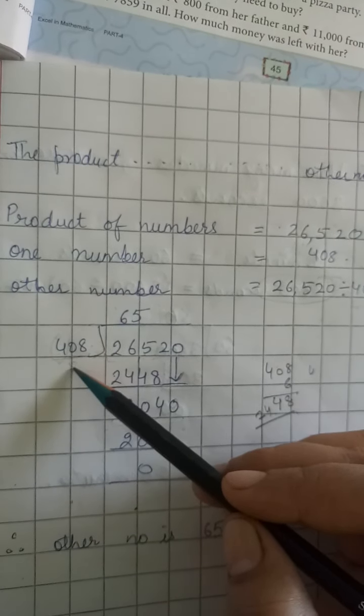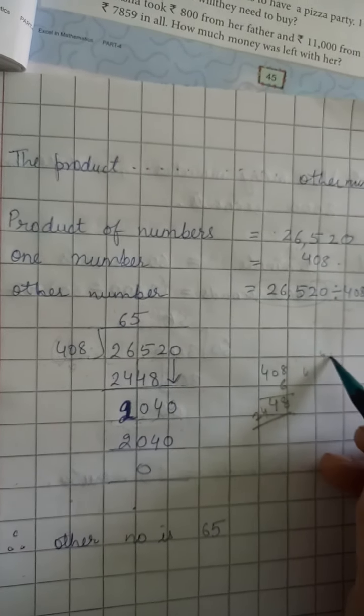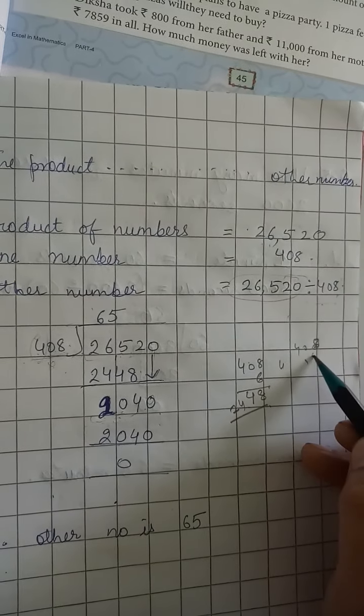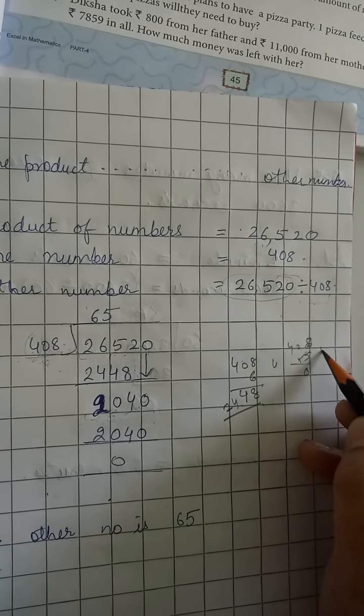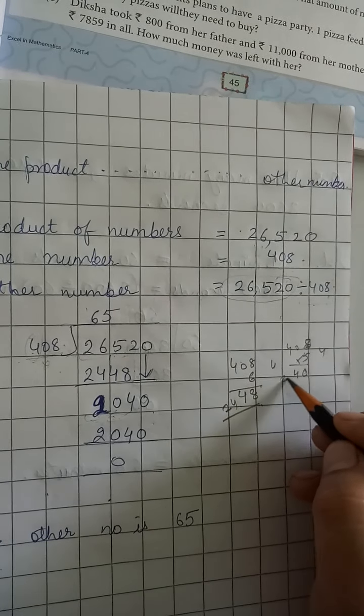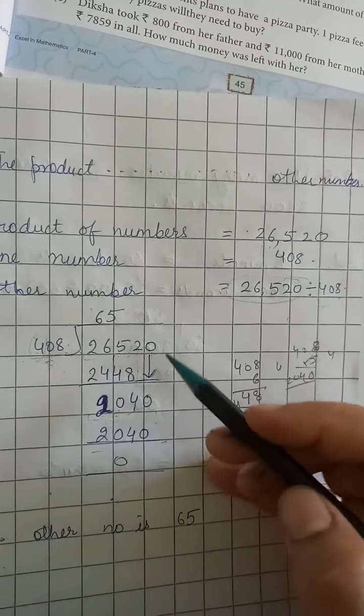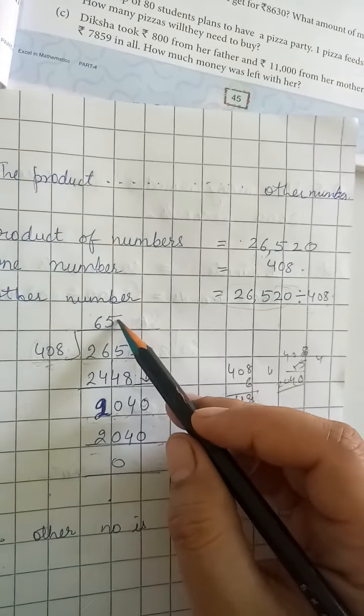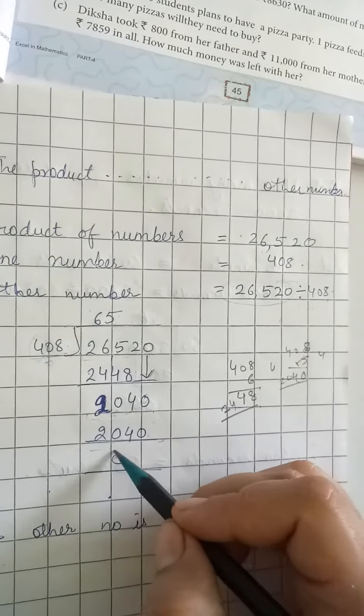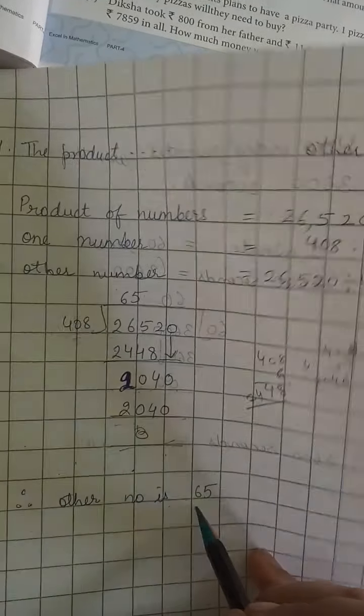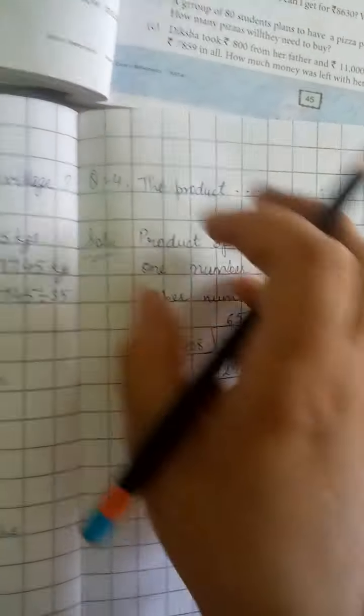408 × 5 is 2,040. It is totally divisible by 408, we get 0 here. So the other number is 65.